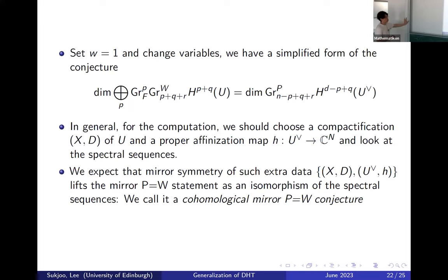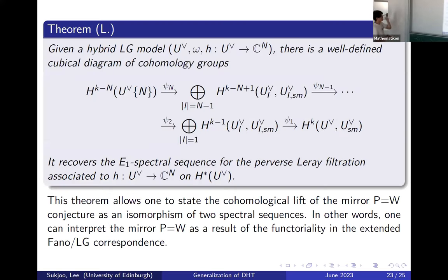What I wrote down here is such data probably lifts this form of the perverse filtration as an isomorphism. But the only problem we have is the sequences for the perverse Leray filtration. So we look at the spectrum. This is just a flag. What we need to do is some sort of another description of the perverse Leray filtration.